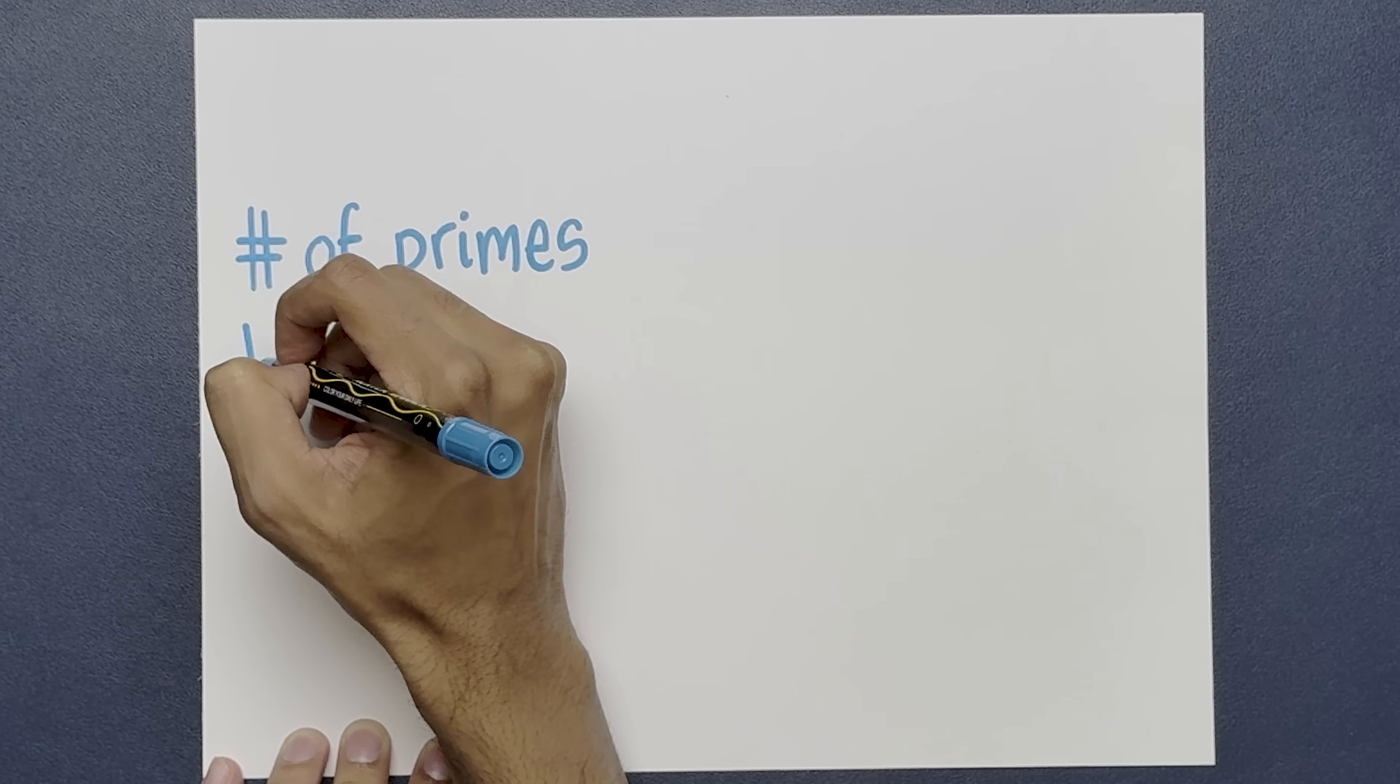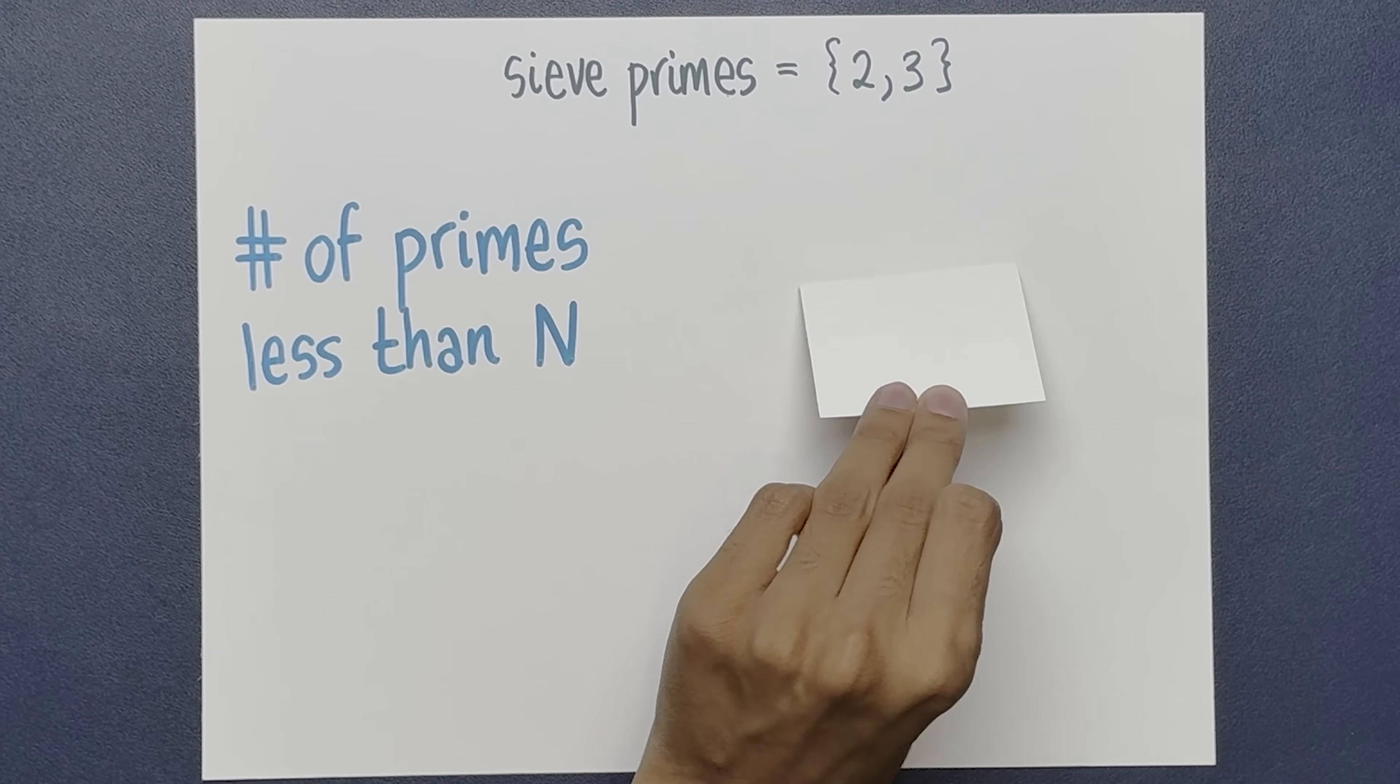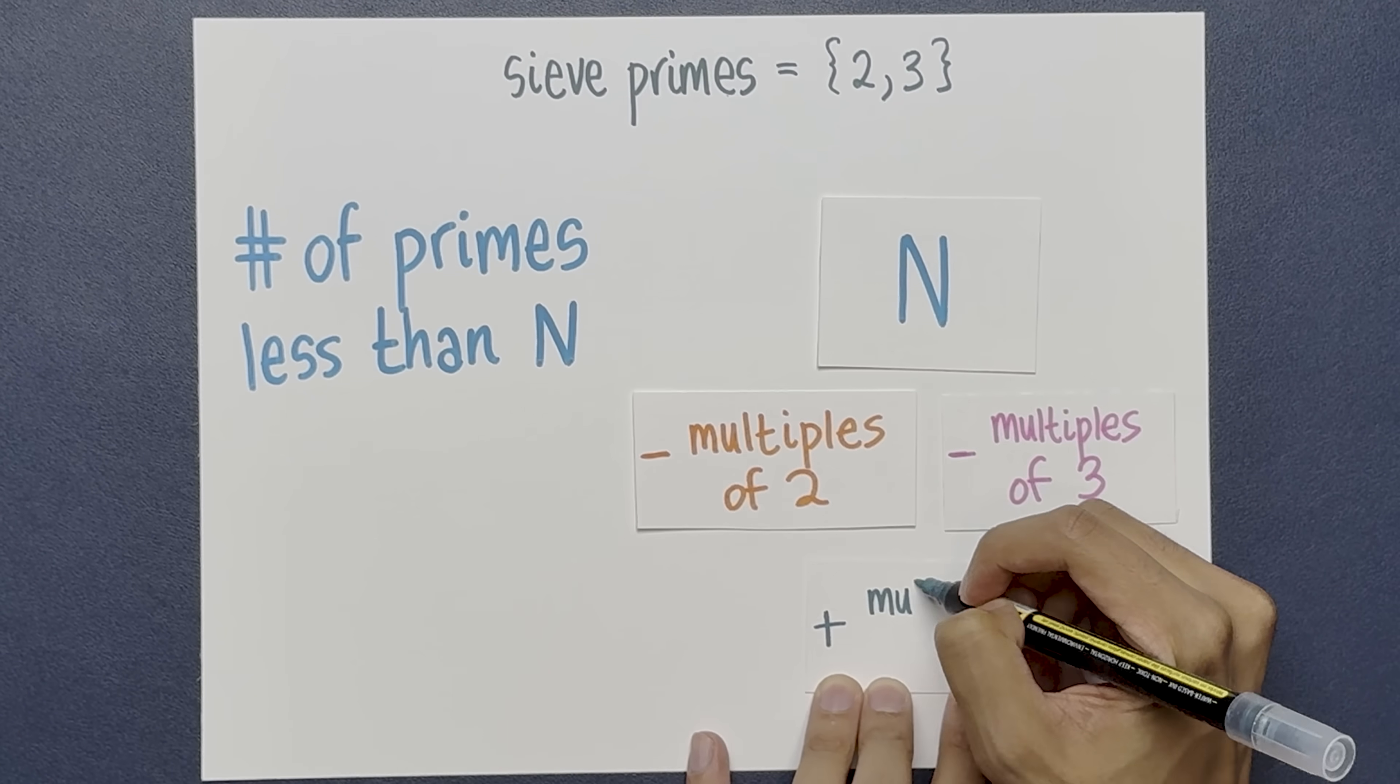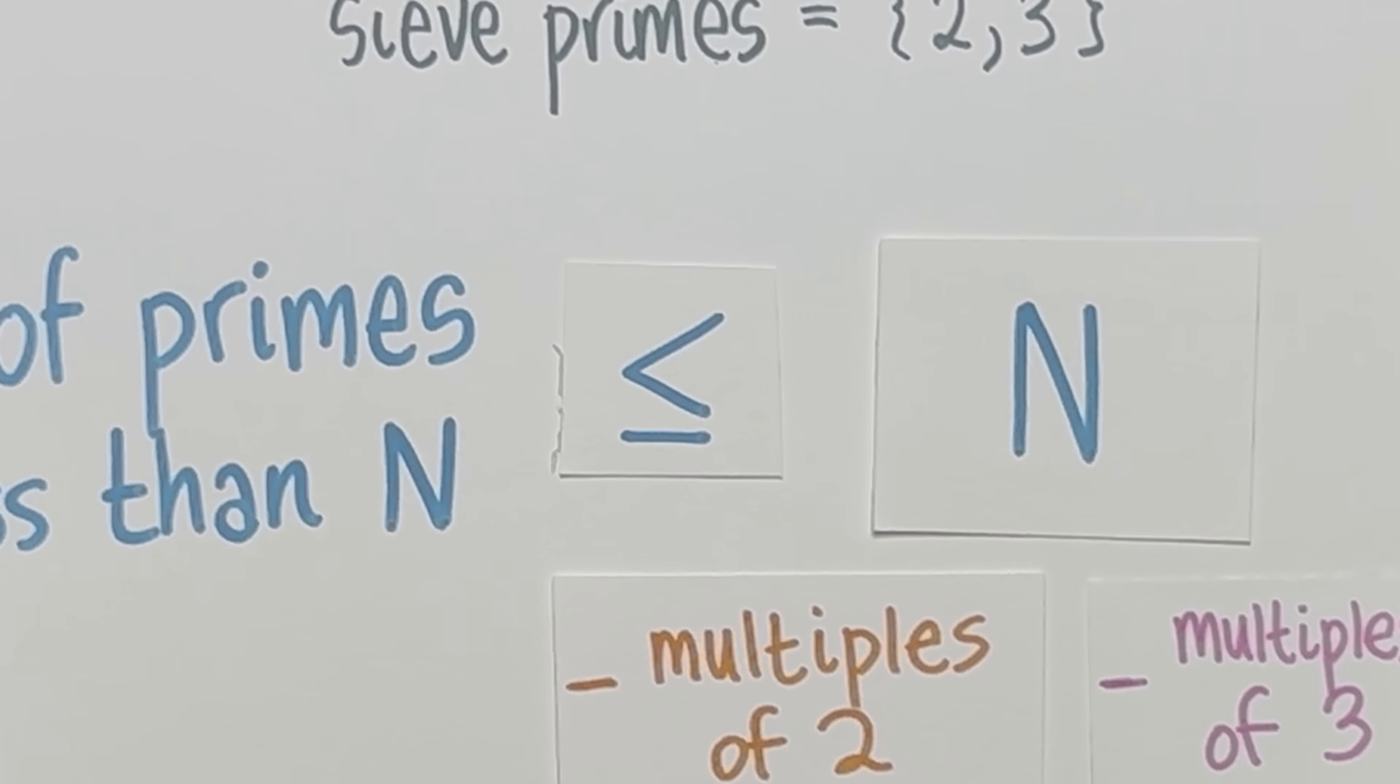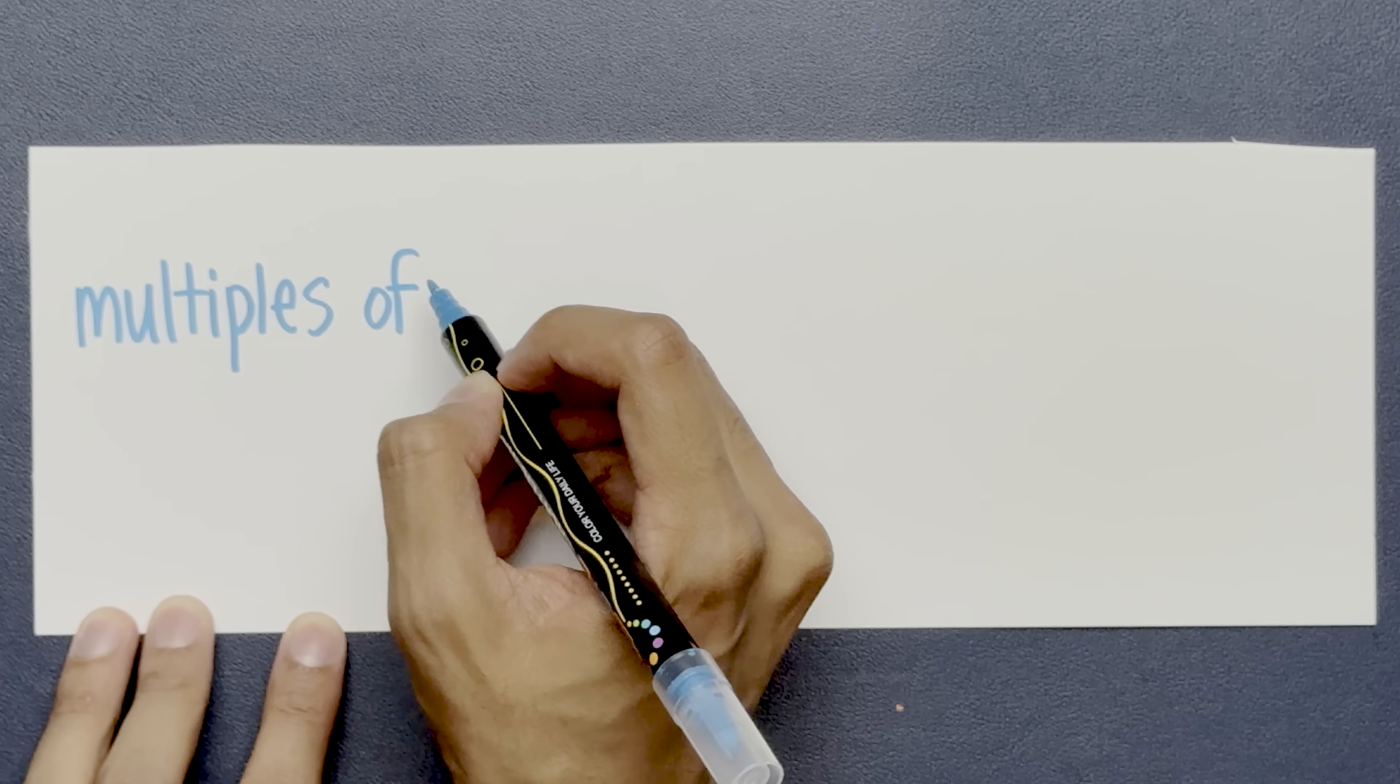Let's use this method to prove this upper bound for the number of primes. Let's say that you want an estimate for the number of primes less than n. We'll start off with a list of primes to sieve by, say 2 and 3. Overall, this is approximately n minus the multiples of just 1 prime, plus the multiples of both primes. Since we're carrying out this process at 2 steps, this gives us an overestimate for the number of primes.